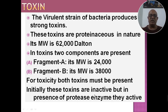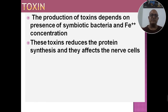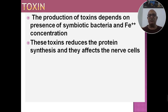Initially these toxins are inactive, but in presence of protease enzyme they become active। The production of toxins depends on the presence of symbiotic bacteria and iron ion concentration — toxin उत्पादन के लिए सहजीवी जीवाणुओं की उपस्थिति और माध्यम में ferric ions present होने चाहिए। These toxins reduce protein synthesis and they affect the nerve cells।